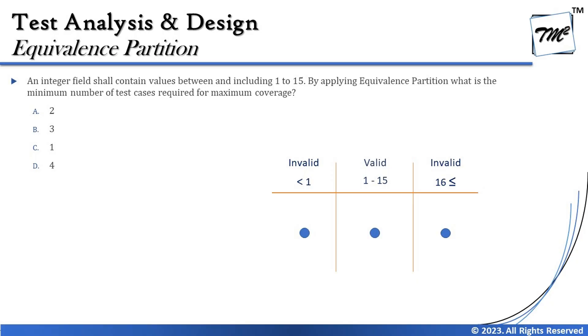Let's take some examples. The first example: an integer field shall contain values between and including 1 to 15. Many people think integers are always from 1 to infinity, but remember the number line — integers range from minus infinity to plus infinity, including zero. So build up that mathematical understanding as soon as you see the subject in the question.